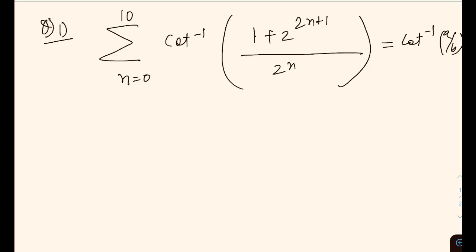The question goes: you have to calculate the value of summation N equals 0 to 10, cot inverse of (1 plus 2 raised to the power 2N plus 1) over (2 raised to the power N). Let's call the value of this cot inverse A by B. So we need to calculate log base 2 of (A plus B) over (B minus A). This is our question. Pause the video and try to think over this. We will shortly give the solution.